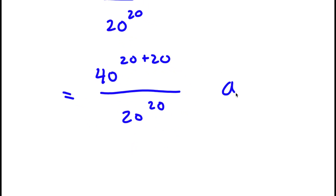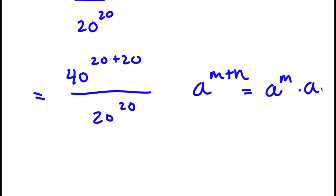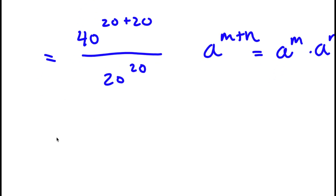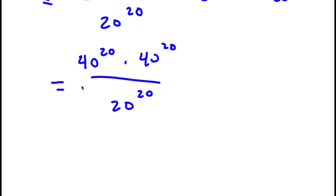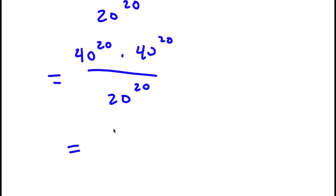If I have something in the form A to the power of M plus N, this equals A to the power of M times A to the power of N. So 40 to the power of 20 plus 20 is the same thing as 40 to the power of 20 times 40 to the power of 20, over 20 to the power of 20.